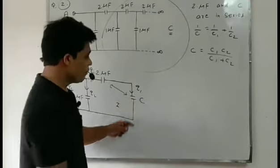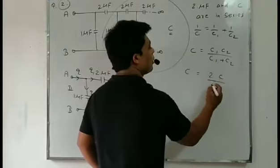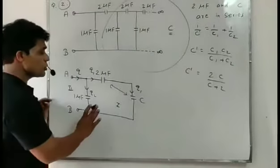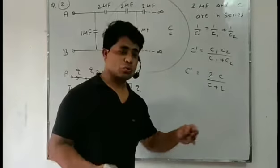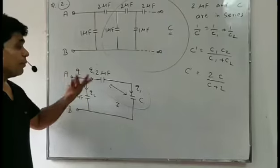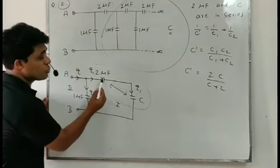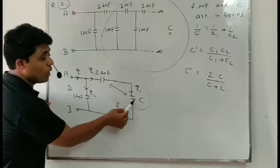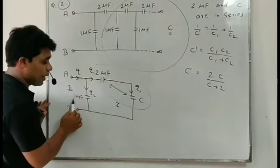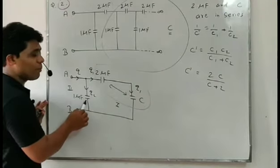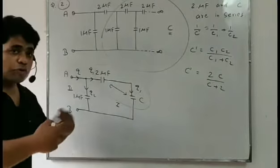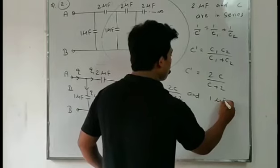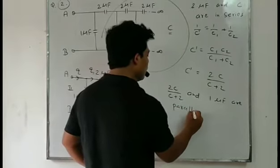So the series combination of 2 microfarad and C gives 2C/(C+2). This result is parallel with the 1 microfarad — because 2 microfarad and C have charge Q1, and the 1 microfarad has charge Q2. These two have different charges compared to the 1 microfarad, so the combination of these will be parallel with 1 microfarad. So 2C/(C+2) and 1 microfarad are in parallel.